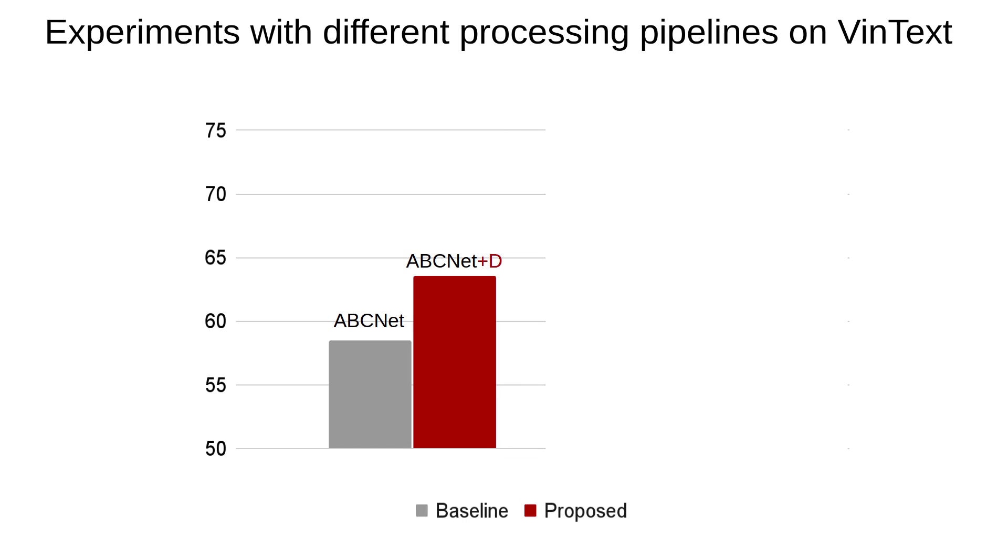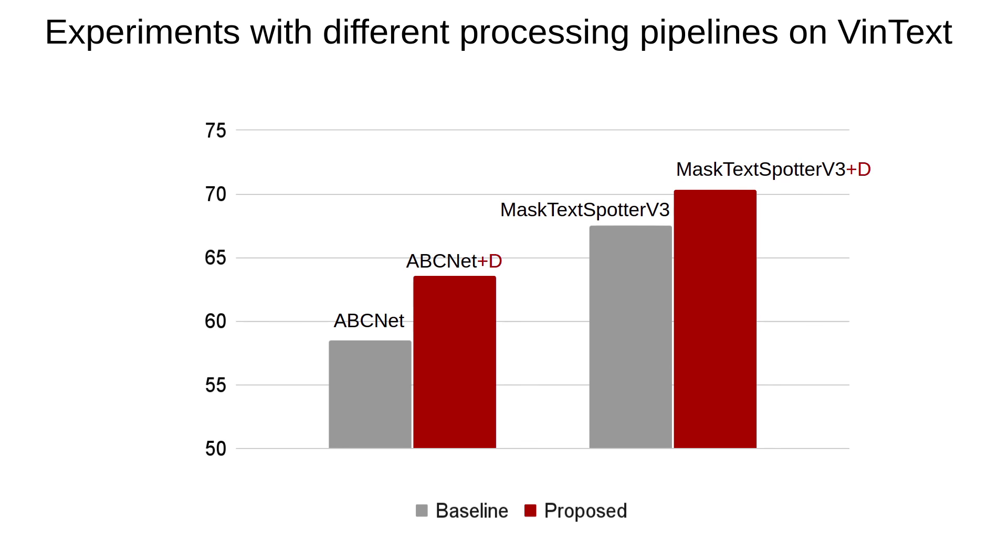Our method can be incorporated into different scene text spotting pipelines to improve their performance. For example, on the VinText dataset, it improves the performance of ABCNet from 58.5 to 63.6. It improves the performance of MaskTextSpotter v3 from 67.5 to 70.3.